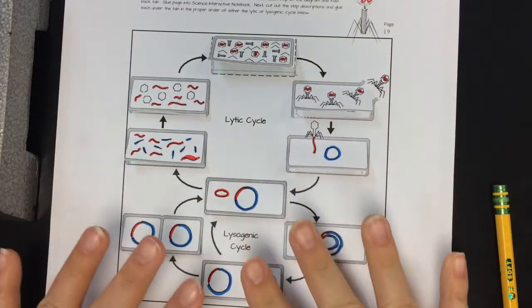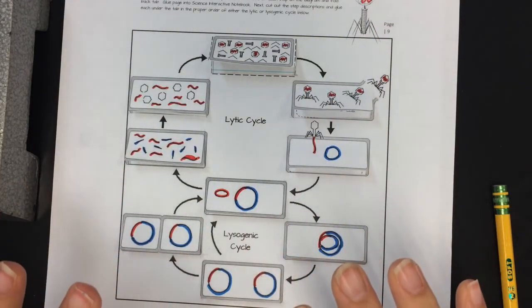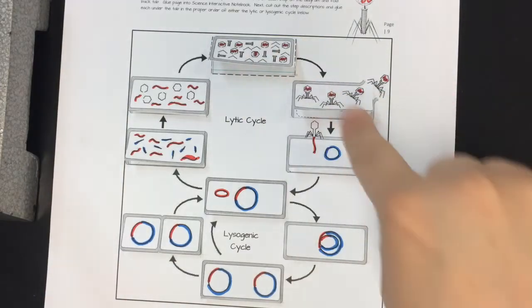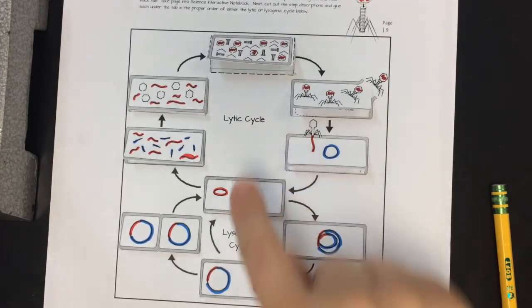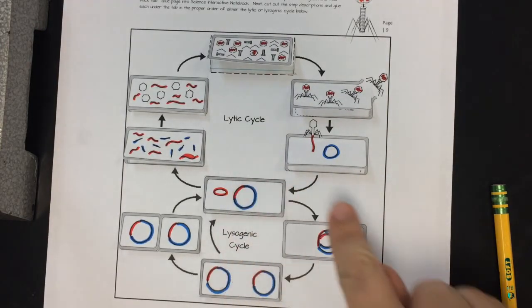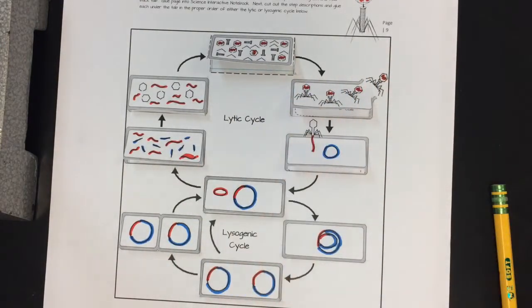So there's information for you guys. I'll post some websites and some book links and stuff like that for you to go so you can get the information for all these. But you do need to know the difference between the lytic cycle and the lysogenic cycle and what's happening at each phase. And so if you have any questions, please come ask. Thank you.